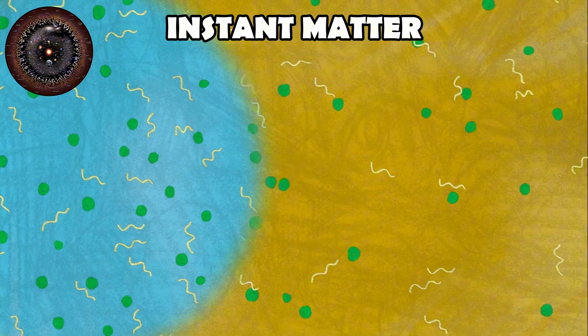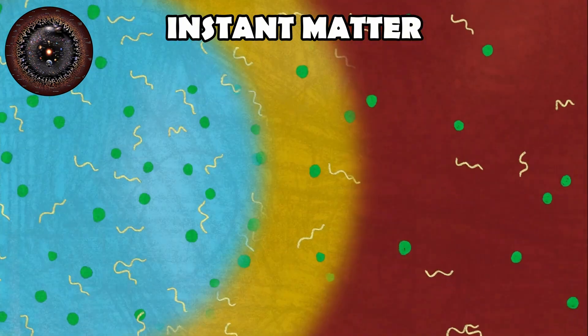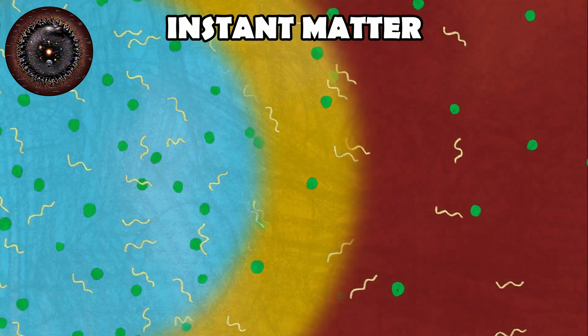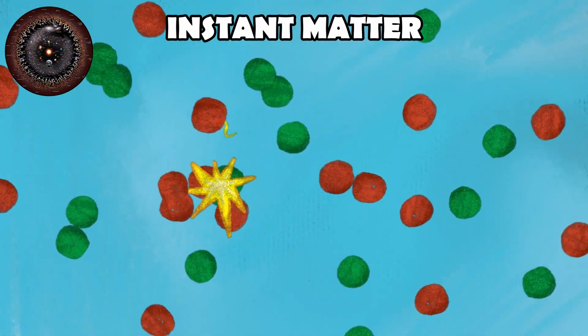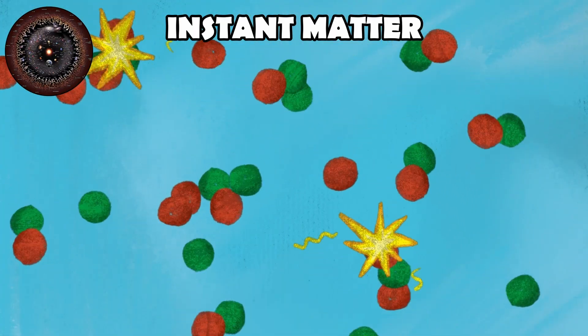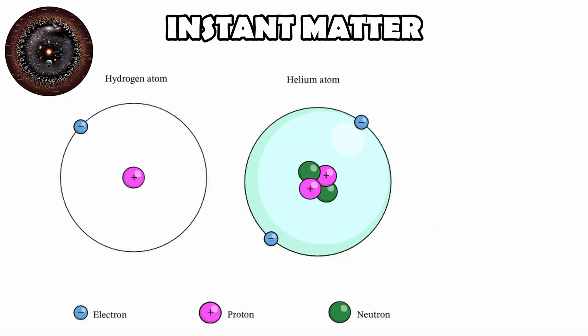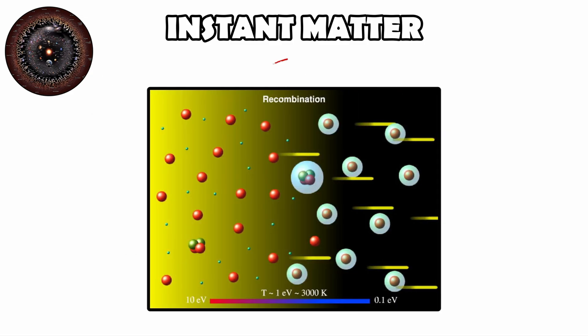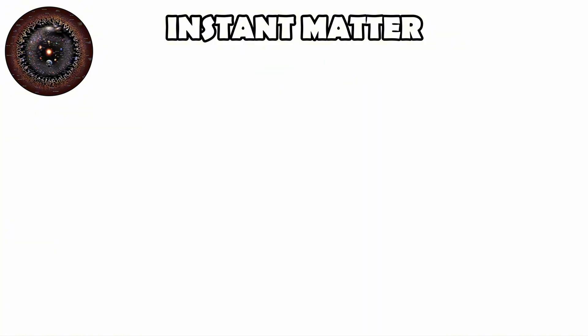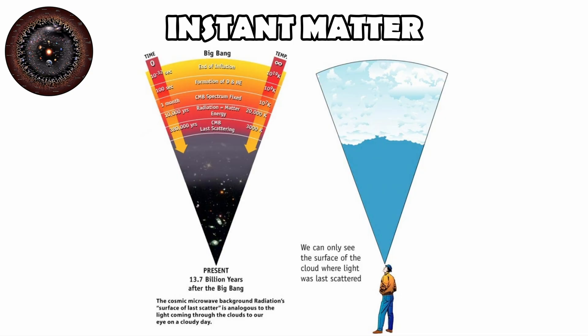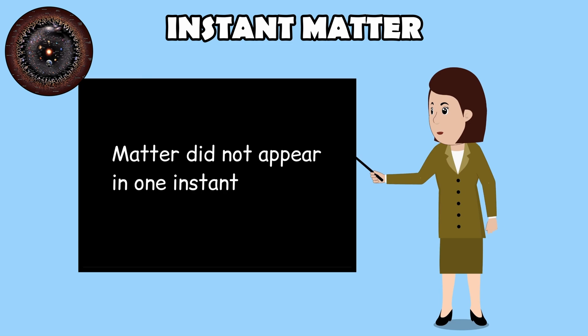Yet even then, the universe was still a hot plasma of charged particles and radiation. Photons couldn't travel freely because they constantly scattered off free electrons. Neutral atoms, the kind of matter we recognize today, didn't form until about 380,000 years later. Only at that time during recombination did the universe become transparent, releasing the radiation we now detect as the cosmic microwave background.